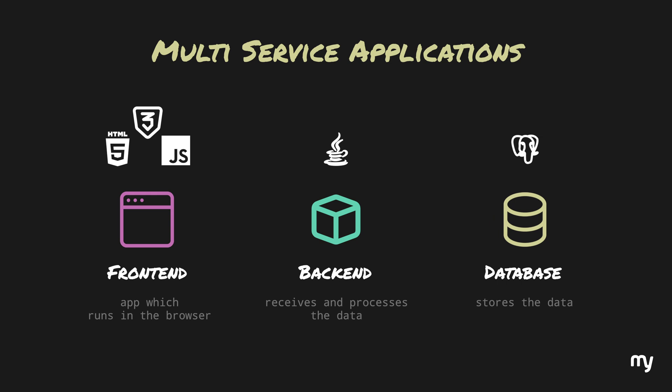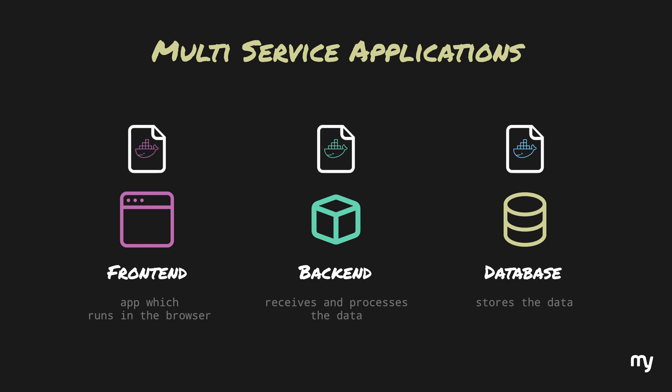Each service has its own responsibility and is based on a different technology. To make all of these work in Docker, our first instinct is to create three Dockerfiles — one for each service — where each Dockerfile contains instructions specific to that service.